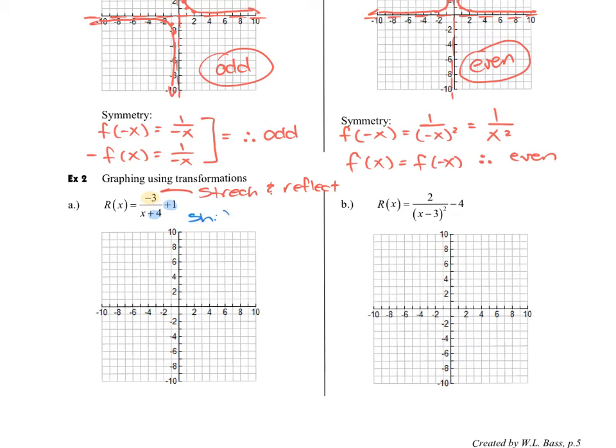So these are going to cause a shift. So our asymptotes are no longer going to intersect at 0, 0. They are going to now intersect at negative 4, positive 1. So that's actually the first thing I'm going to do is I'm going to plot my new asymptotes. So negative 4, positive 1. And I'm going to put those in.